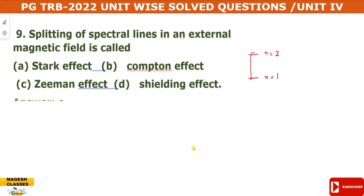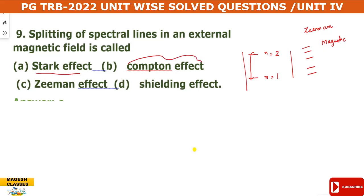When the spectrum splits in a magnetic field, this is the Zeeman effect. When placed in an electric field, the spectral lines split — that is the Stark effect. The Compton effect is related to X-ray scattering, and the shielding effect refers to electron shielding. Therefore, the answer for magnetic field splitting is the Zeeman effect, and for electric field splitting it is the Stark effect.